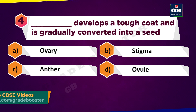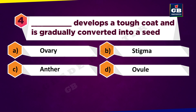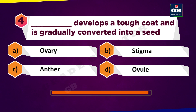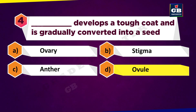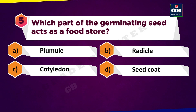Dash develops a tough coat and is gradually converted into a seed. A: Ovary. B: Stigma. C: Anther. D: Ovule. Which part of the germinating seed acts as a food store? A: Plumule. B: Radicle. C: Cotyledon. D: Seed coat.